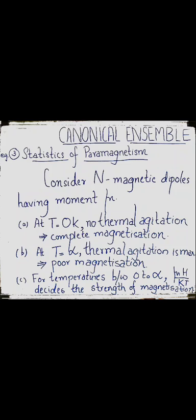In the study of the statistics of paramagnetism using canonical ensemble formulation, we consider a system of dipoles and find out the partition function. Using the partition function, we determine the magnetization of the system, and from the value of the magnetization, the state of the system under different conditions like low field and high temperature, or high field and low temperature, can be accurately found out.